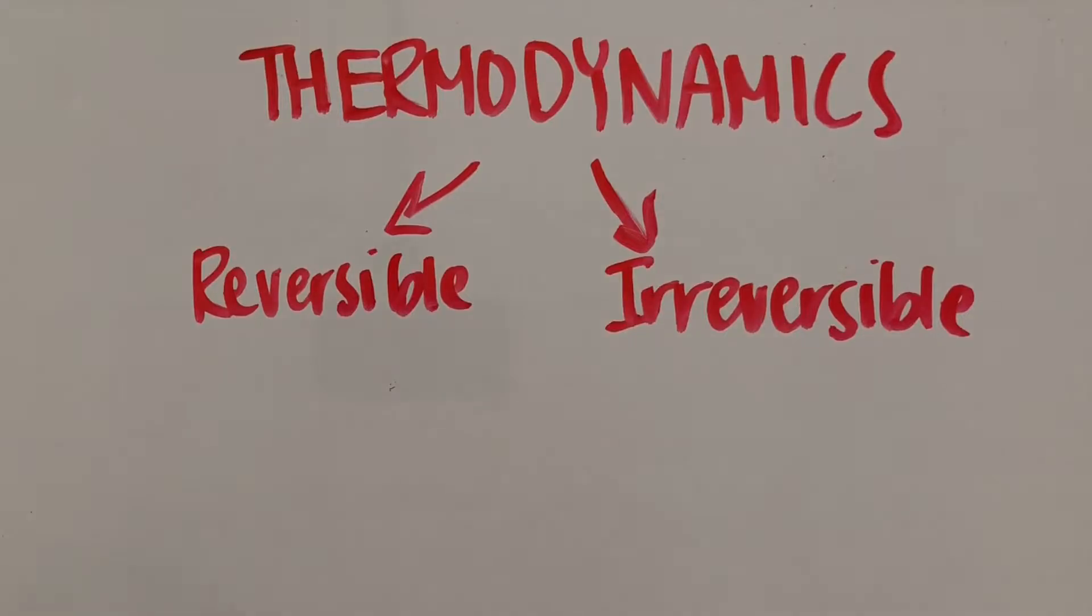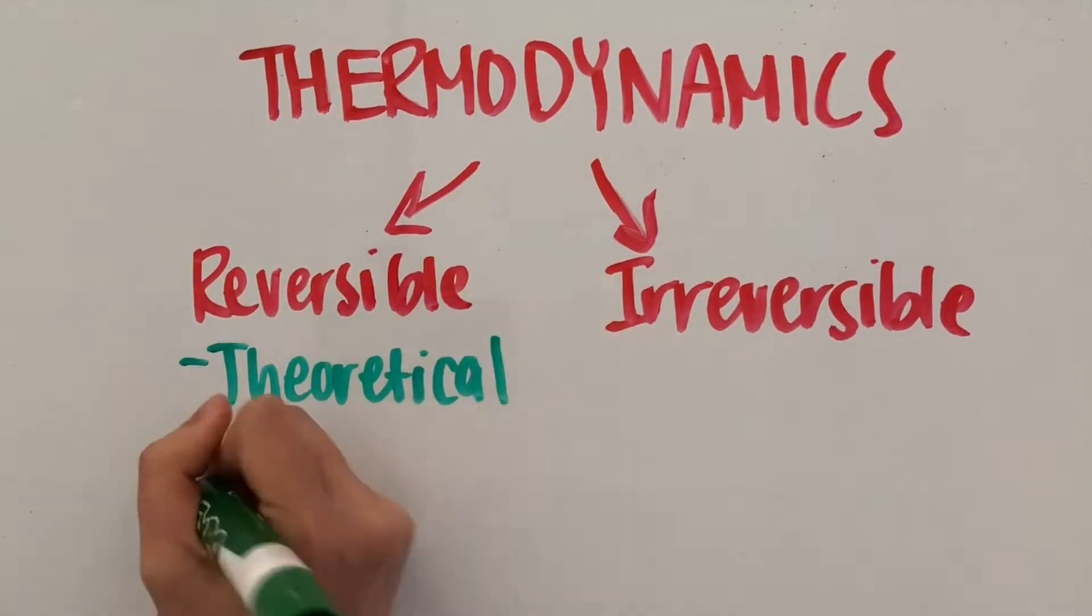If I knocked this marker over, it wouldn't be able to magically happen backwards with everything back in the same exact place as it was before. Or could it? Anyways, that's why reversible processes are theoretical and ideal.